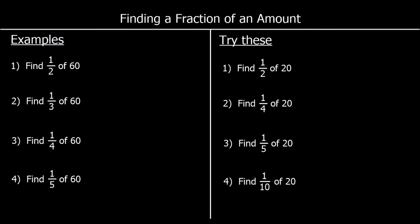In these questions we are finding a fraction of an amount. Question 1 says find half of 60. So we're going to split 60 up into two equal bits. If we split it up into two equal parts, how big would each one be? 60 divided by 2 is 30. So two 30s make 60. So half of 60 is 30.